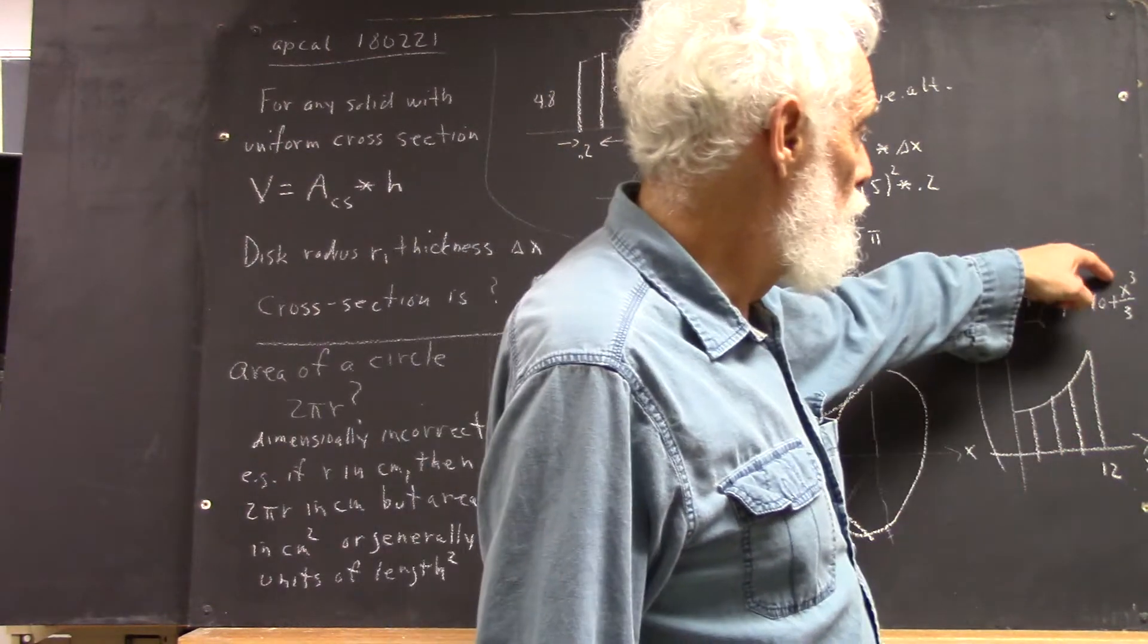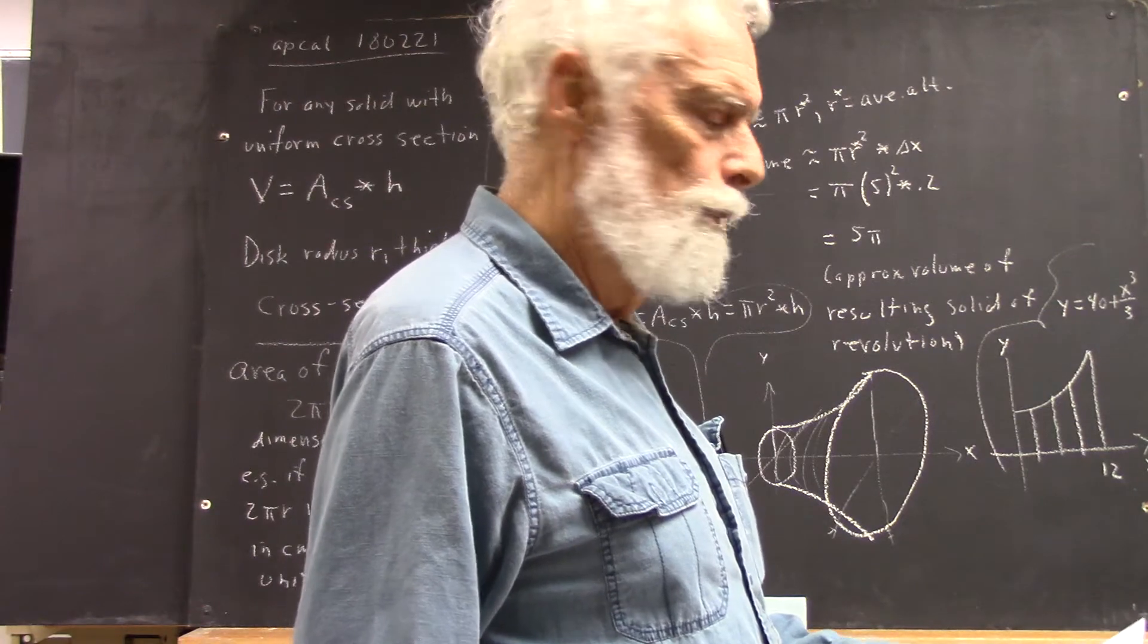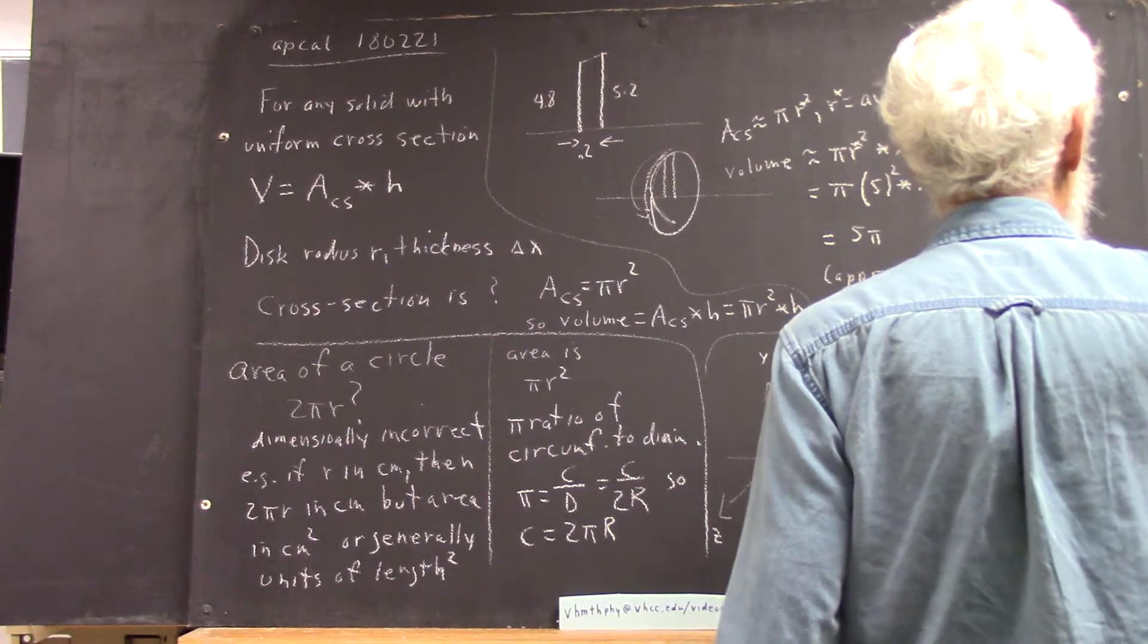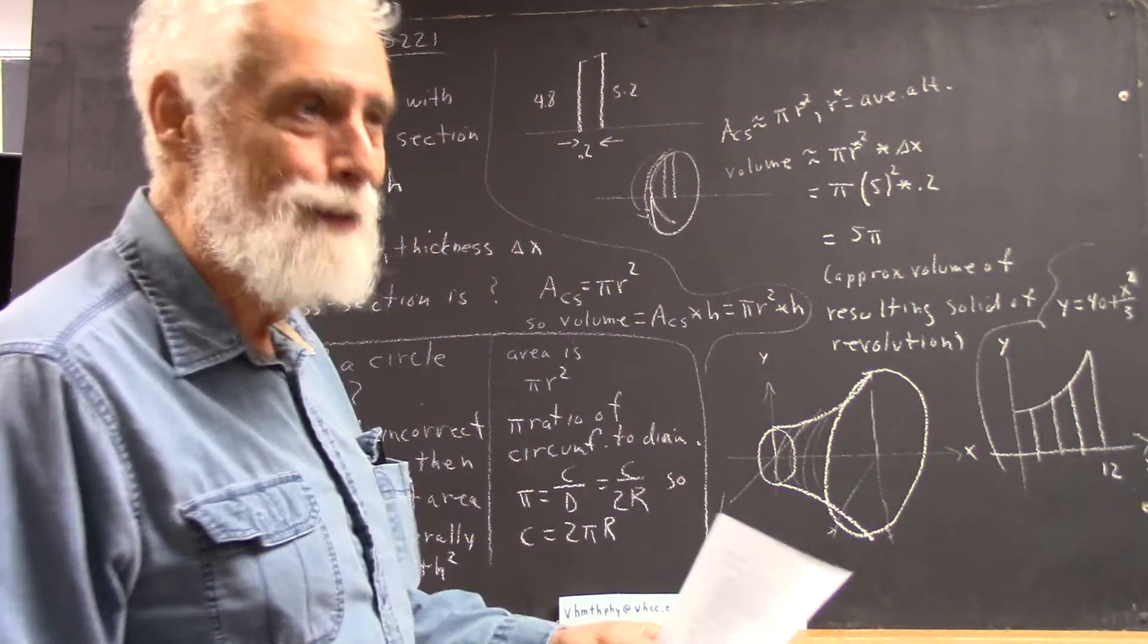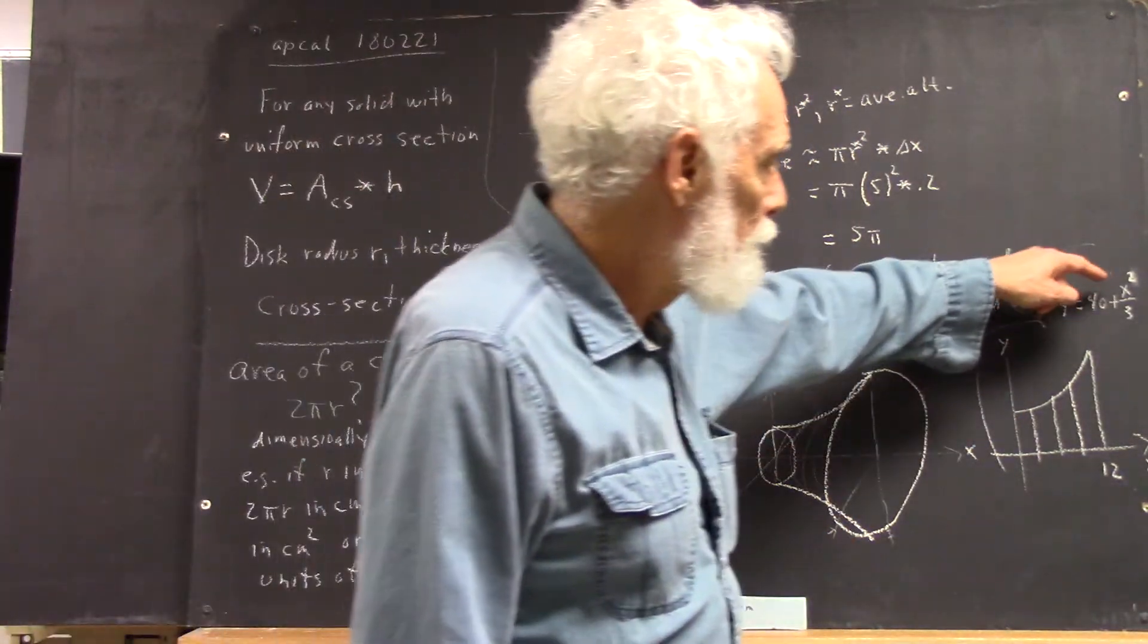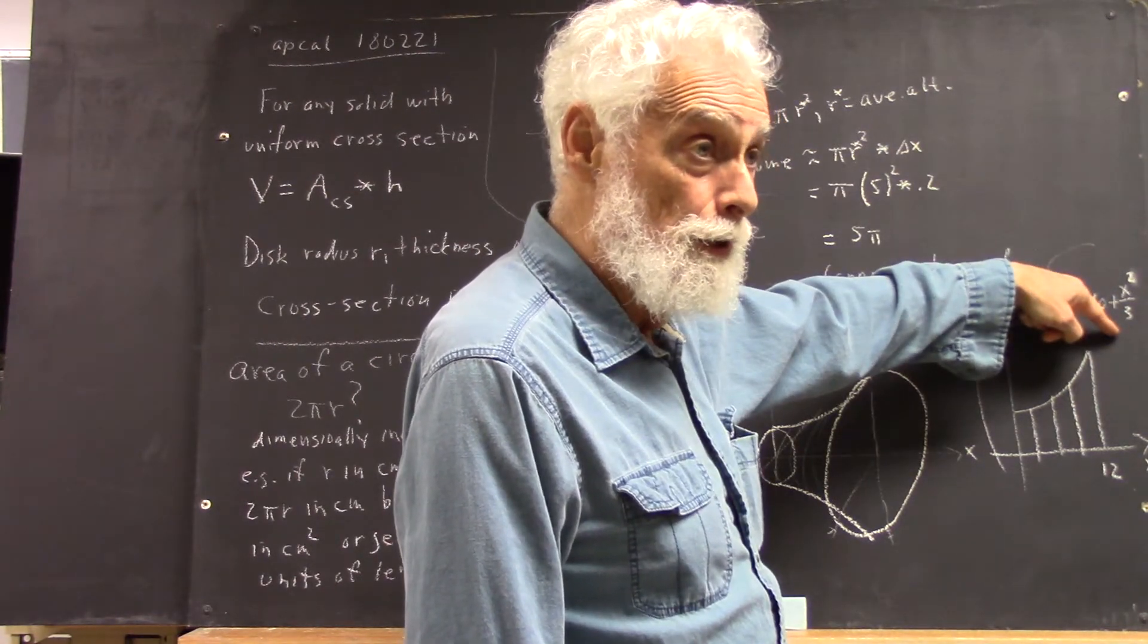When x is 12, wait a minute, this should be x squared over 3. x cubed would be 1728 and it's going to get way too high. But x squared is just going to be 144. Divide that by 3, you get 48.